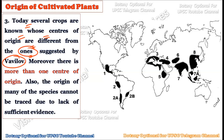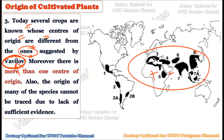A third drawback is that today several crop plants are known whose centers of origin differ from those suggested by Vavilov. Latest research has found many new crop plant origin centers in addition to the ones Vavilov identified, meaning Vavilov did not cover all centers of origin. Furthermore, some species may have more than one center of origin — for example, wheat is found in the American, Indian, and Chinese subcontinent, suggesting multiple centers.